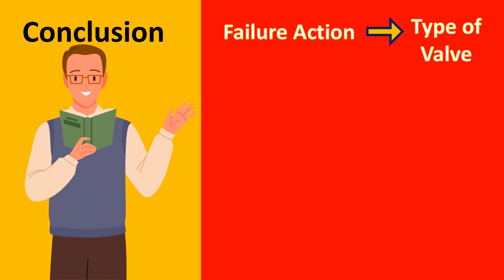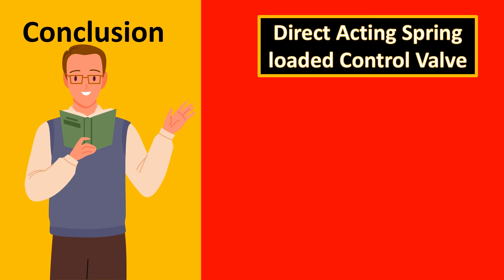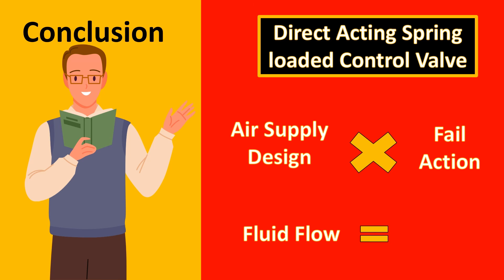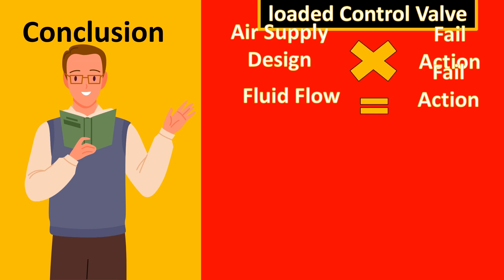Now we look finally into the conclusion of all of these things. The failure action is basically dependent on the type of valve. If it is a direct acting spring loaded control valve remember the air supply always has to be opposite to the failure action, that is air to open for fail close and air to close for fail open. The fluid flow must always assist the fail direction.